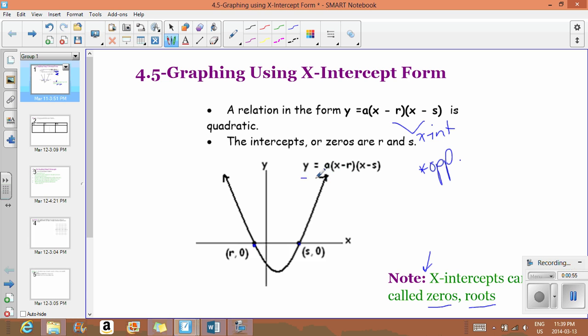And so this will always be the form for how you get your x-intercepts. As an example, y equals negative 3, x minus 2, x plus 1. So your x-intercepts are 2 and negative 1. And so you put those on your graph.